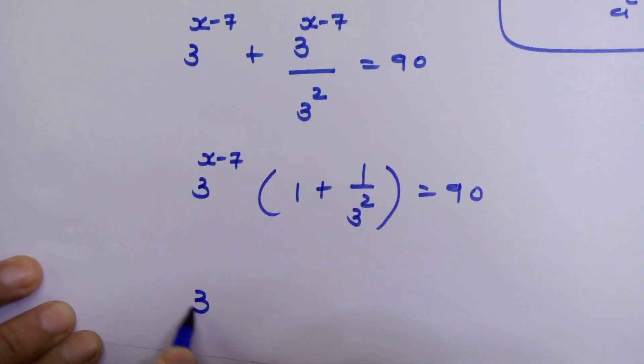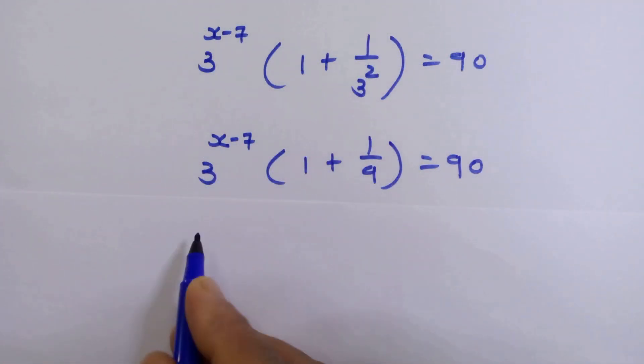So we have 3 raised to x minus 7 times 1 plus 1 upon 9 is equal to 90. Now we will take LCM to simplify.